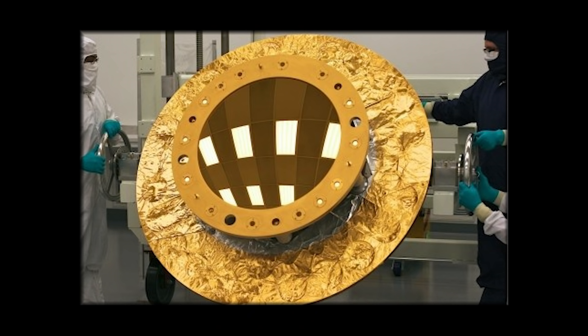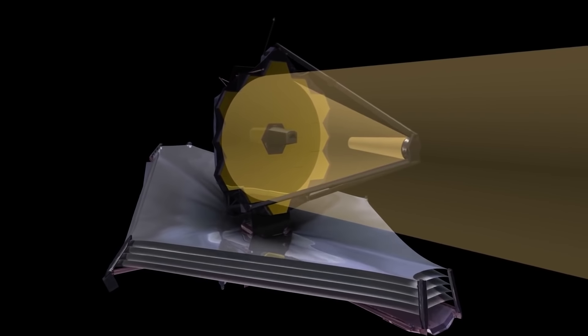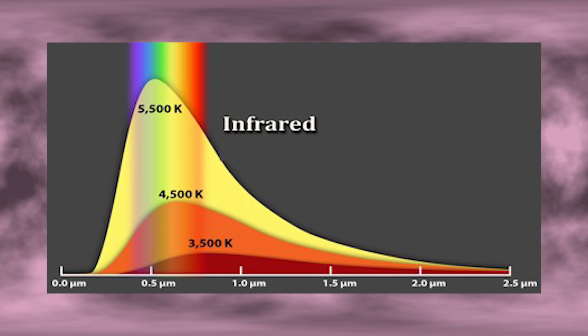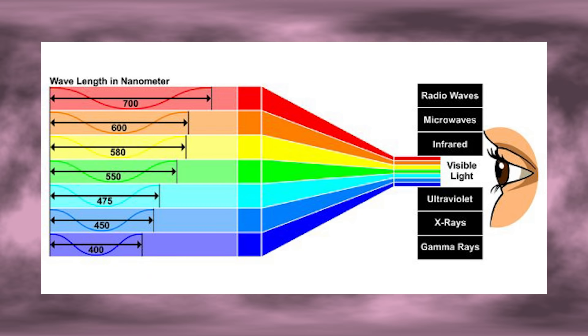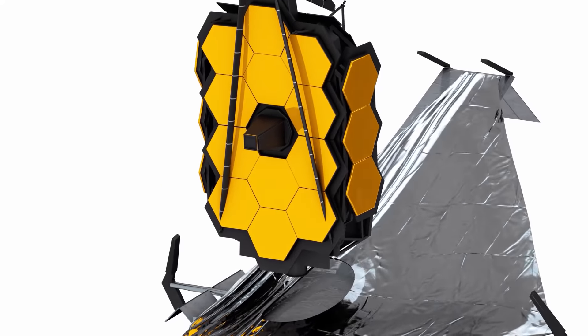The less than 2 ounces of 24 karat gold reflects infrared light better than any other metal, making it a good choice for jewelry. Infrared is a wavelength just outside of the visible spectrum, which is what humans can see.